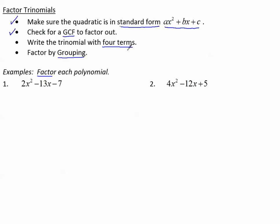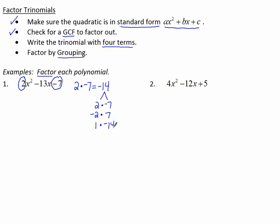Next, write the trinomial with four terms. How do we do that? We take the leading coefficient and the constant term — notice I circled the sign — and multiply them together. 2 times negative 7 makes negative 14. Then I try to think of all of the factors of negative 14 that will add up to make negative 13. I could do negative 2 times positive 7, or 1 times negative 14, or negative 1 times 14.